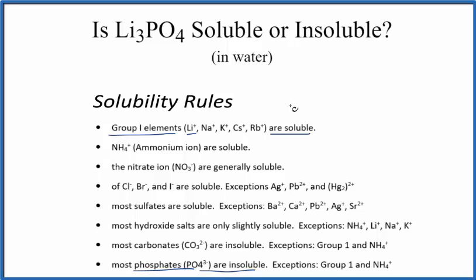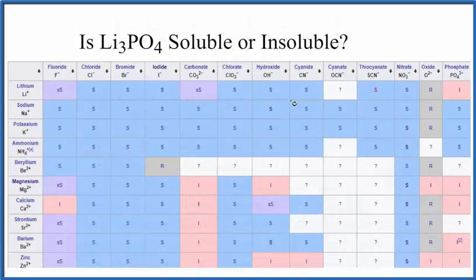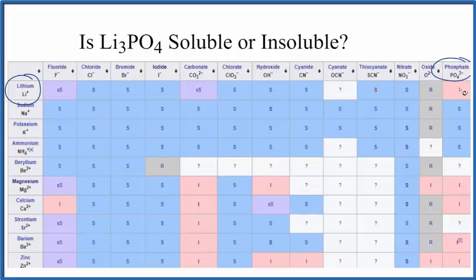Let's take a look at a solubility table real quick. So this is part of a larger solubility table. Here's lithium right here, Li+. We go over and we're looking for phosphate, which is way over here. Phosphate is insoluble. So that's a conflict with what we saw with our rules.